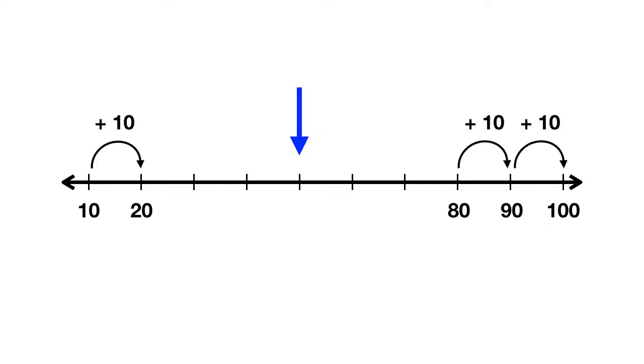So on this number line, what happens when you move over one dash? You just add 10 to your number. So even though they're not marked, we can move from the 20 and add 10. Now we're at 30. Then we can move from the 30, add another 10. We're at 40.